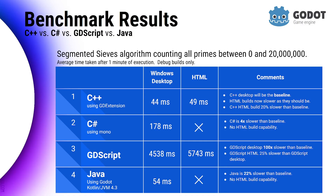Java using the Godot Kotlin JVM came in at 54 milliseconds, which is 22% slower — not 22 times slower — than the C++ baseline. It also lacks HTML build capability, but 54 milliseconds versus 44 milliseconds is very close. Java is three times faster than C#, so if you're only targeting desktop and prefer Java, you're in good shape — you don't have to use C# and you'll get three times better performance. The overall summary is that everything landed in roughly the same ballpark as before; the larger number just gave better resolution.